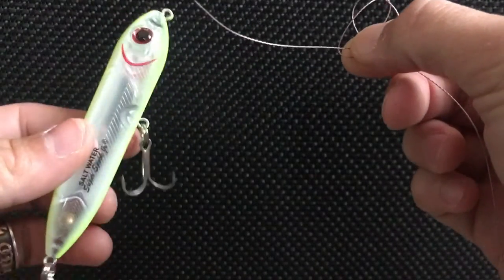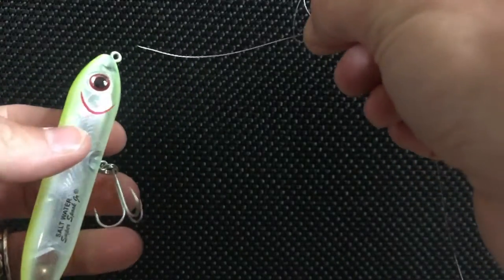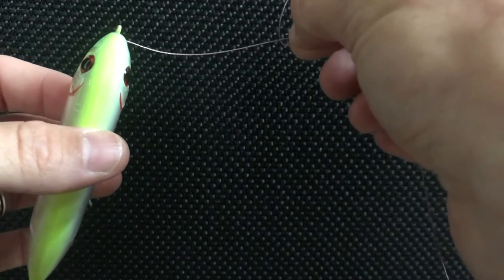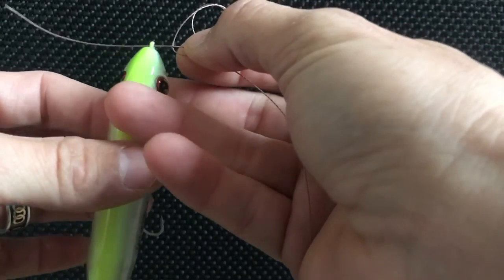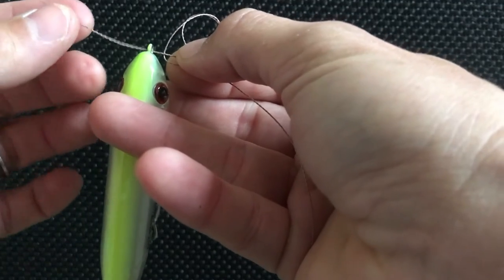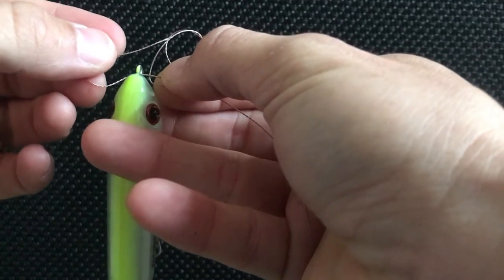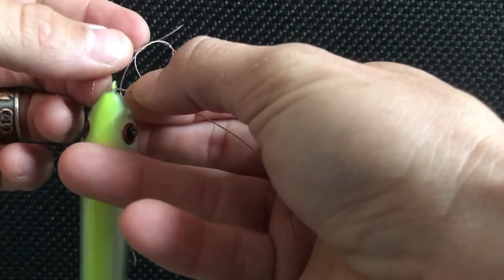Take your tag end and your bait. This works great for treble hooks because you don't have to go around the whole bait like a Palomar knot. Take that tag end, go through your bait, run your bait up there right next to that first loop. Take your tag end and go through that second loop you created.